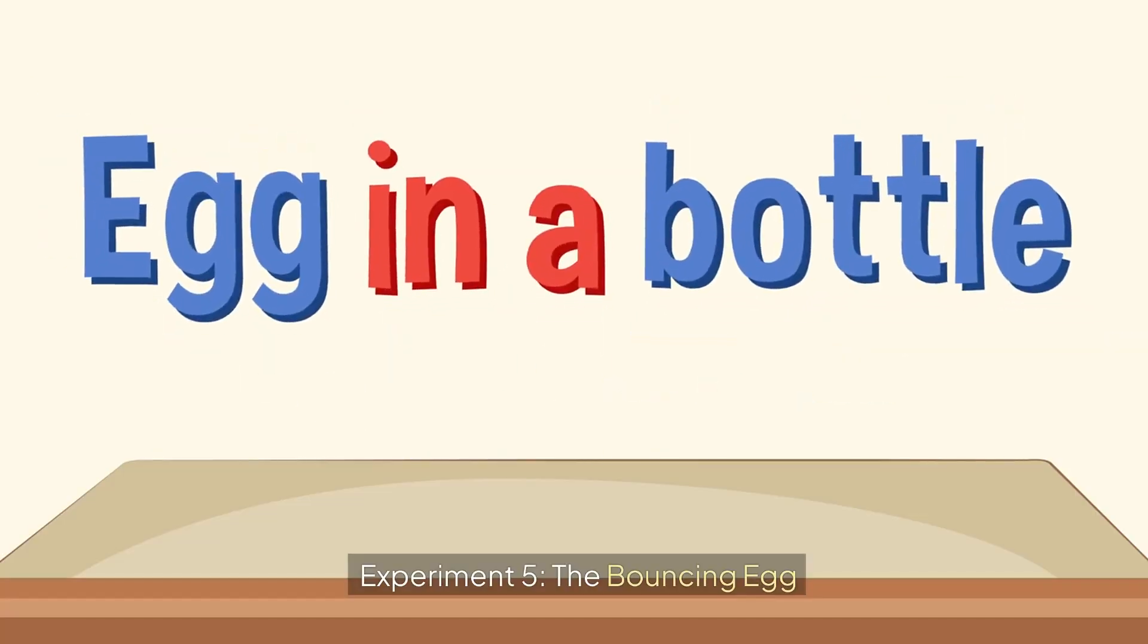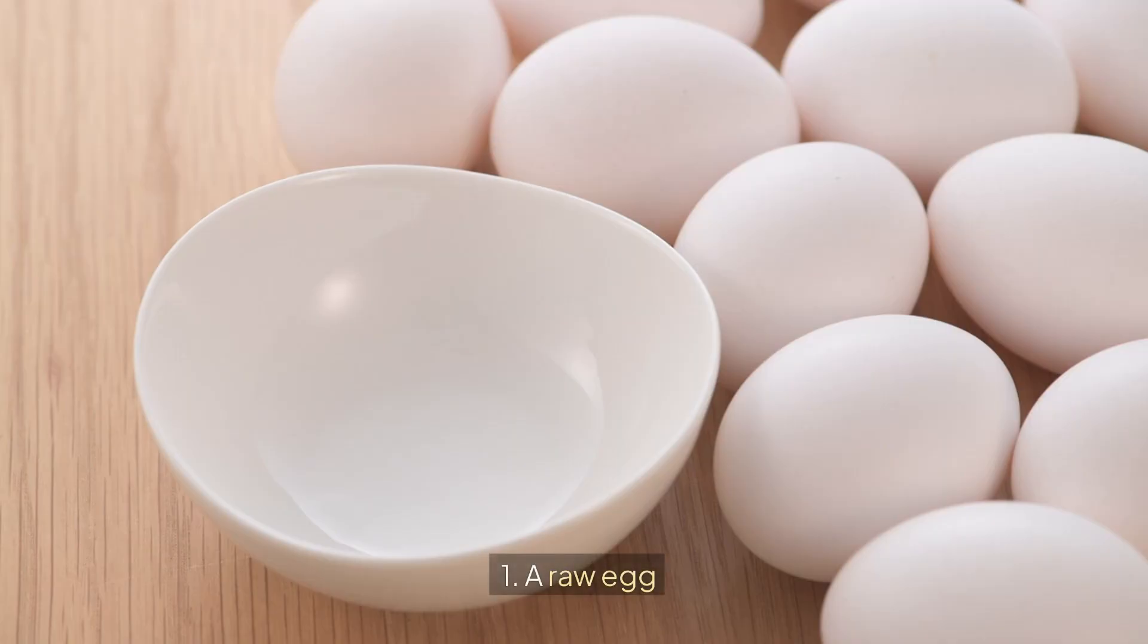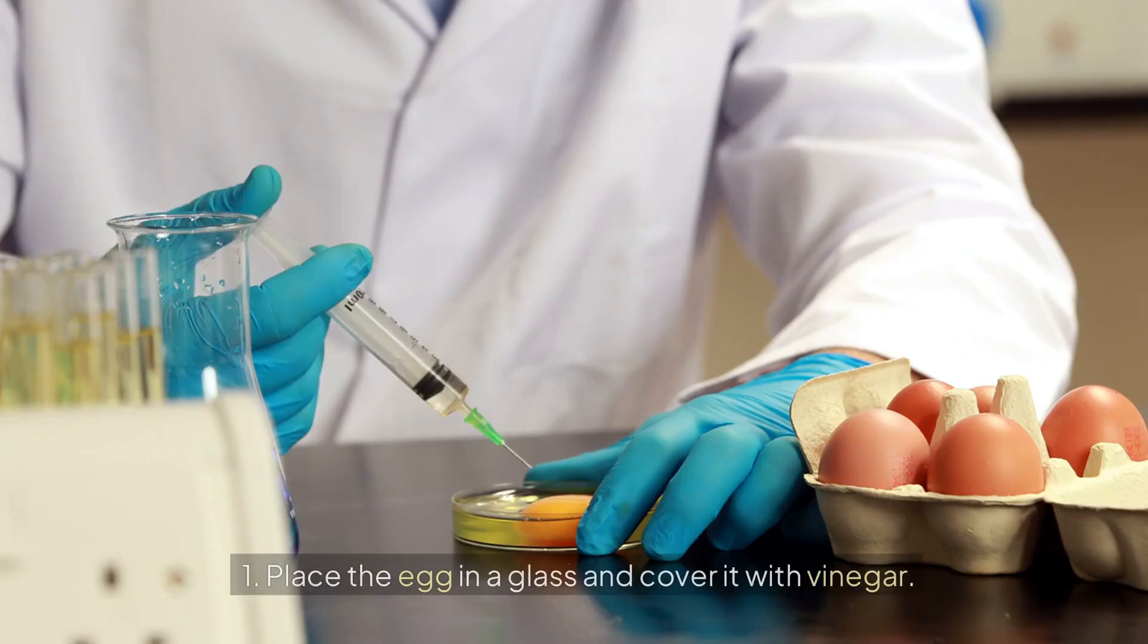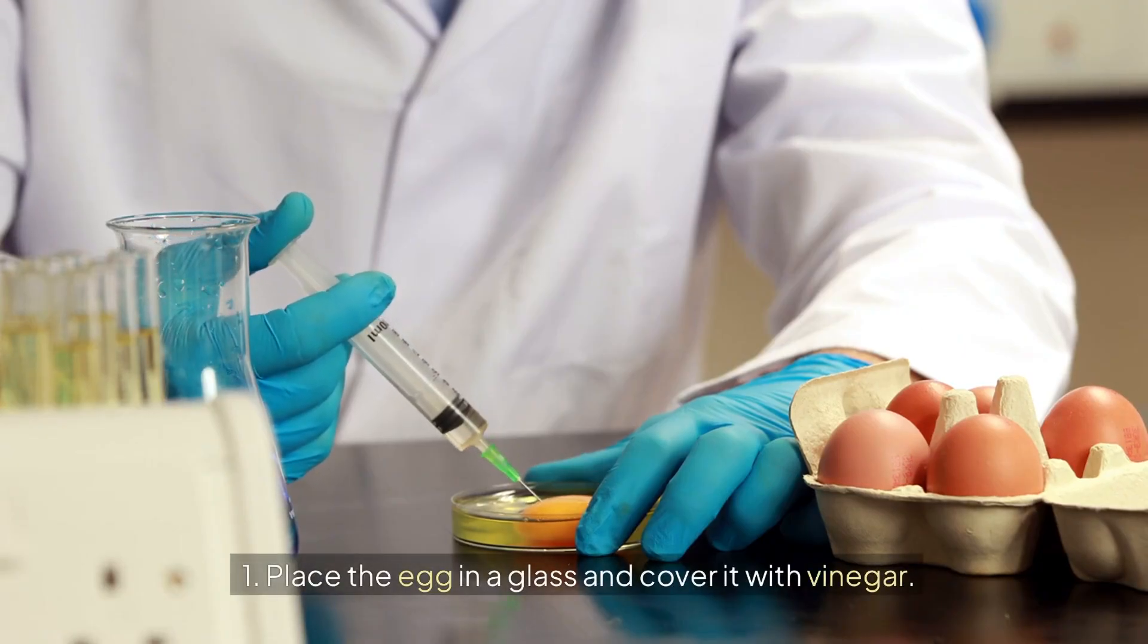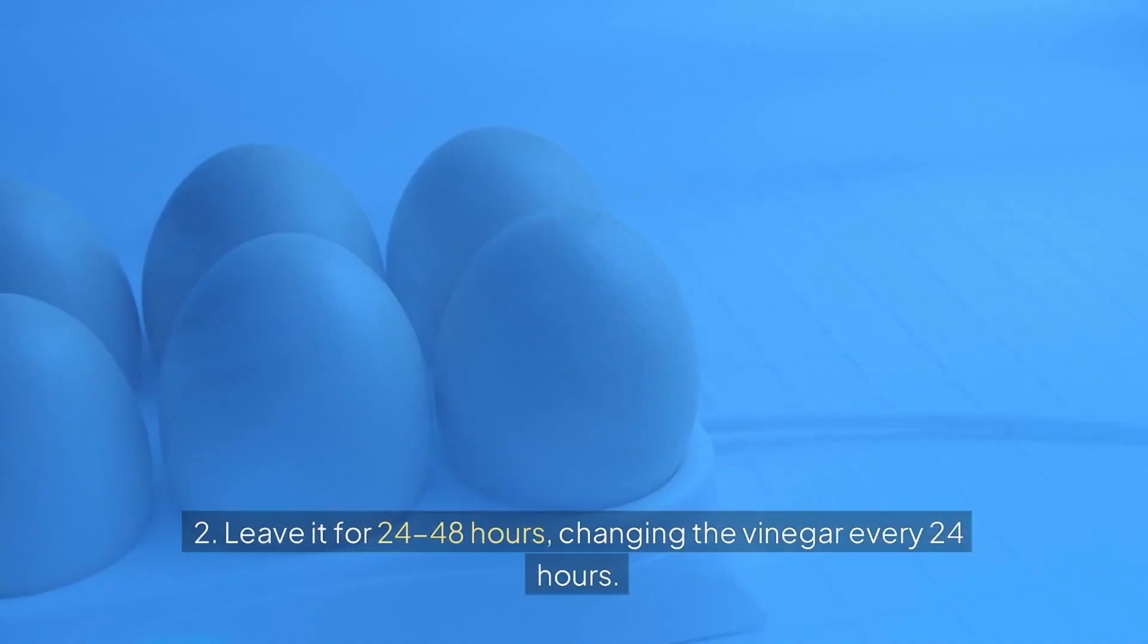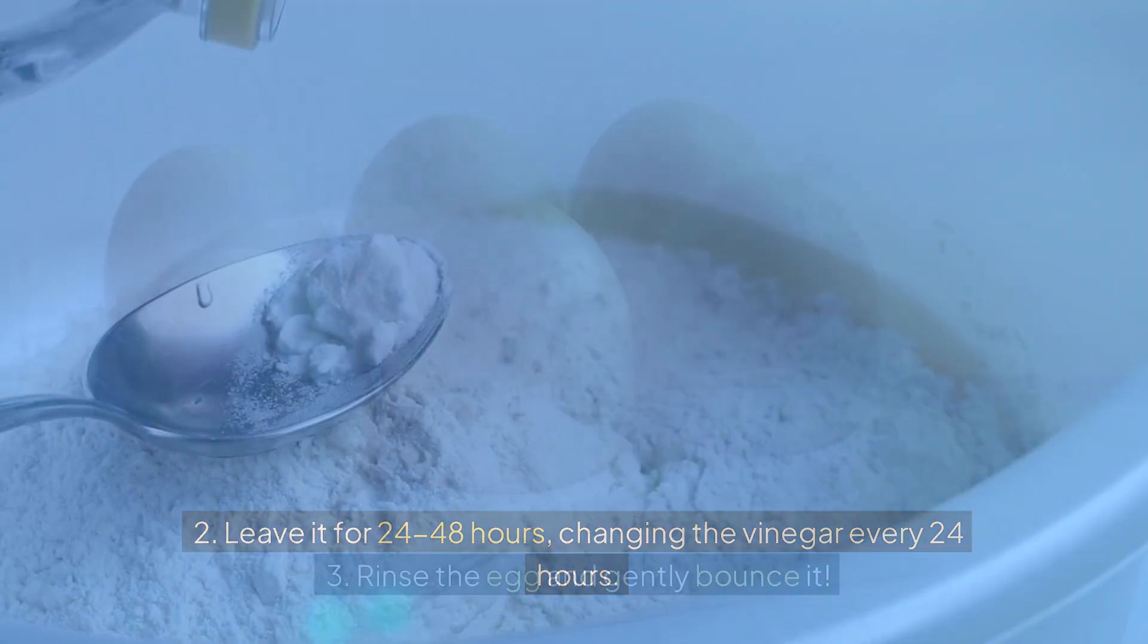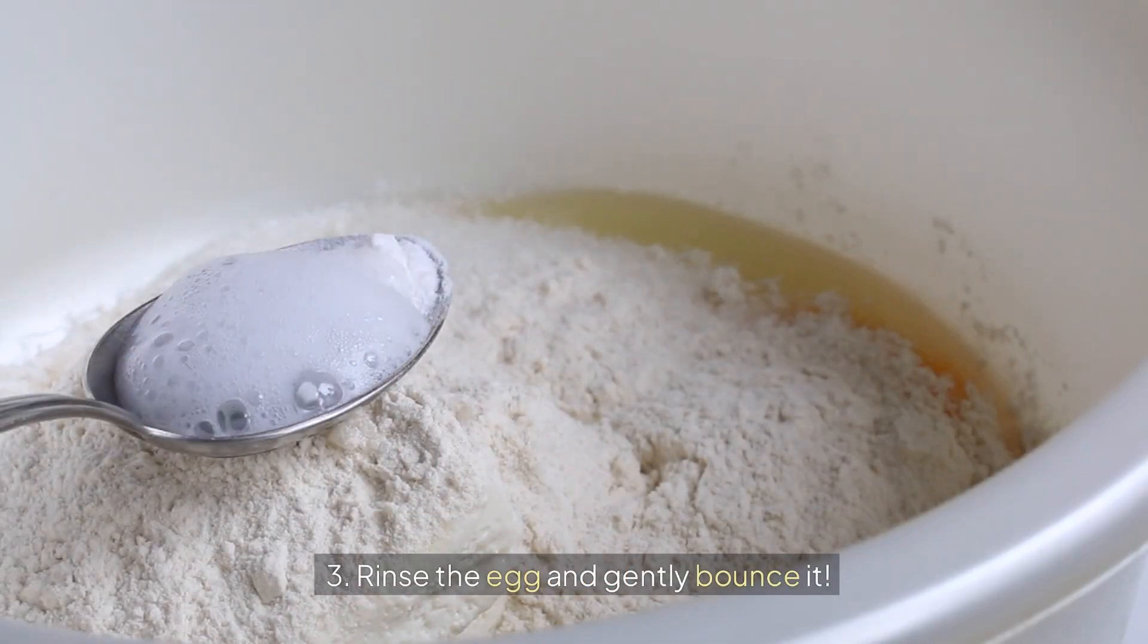Experiment 5: The bouncing egg. Supplies: a raw egg, vinegar, and a glass or jar. Steps: Place the egg in a glass and cover it with vinegar. Leave it for 24-48 hours, changing the vinegar every 24 hours. Rinse the egg and gently bounce it.